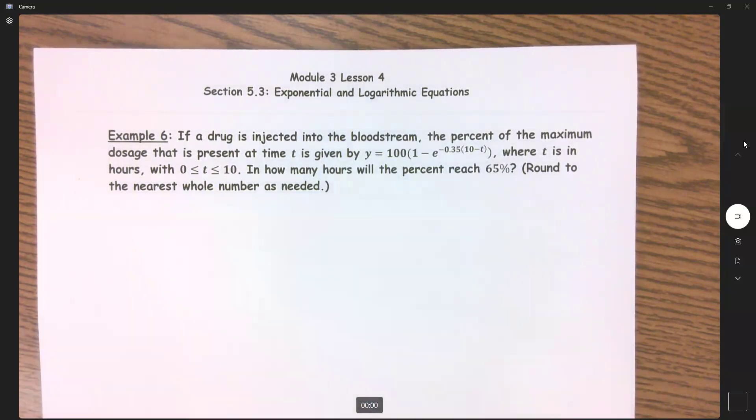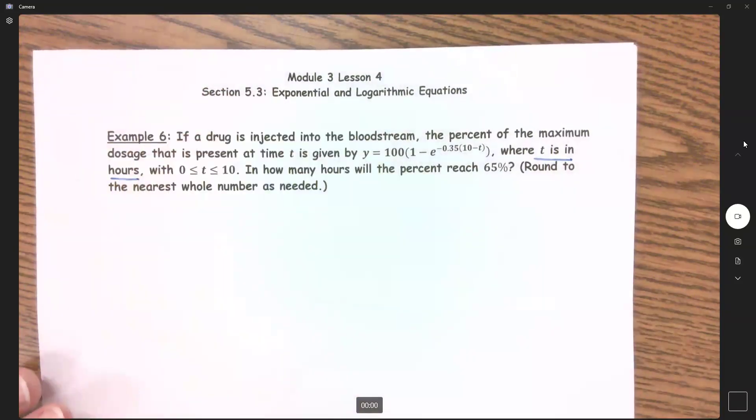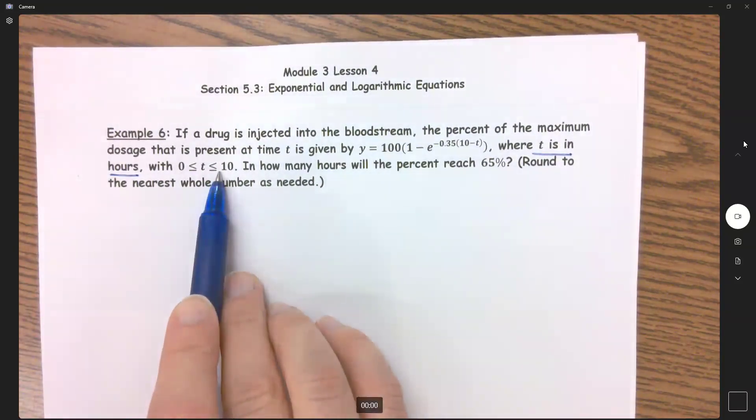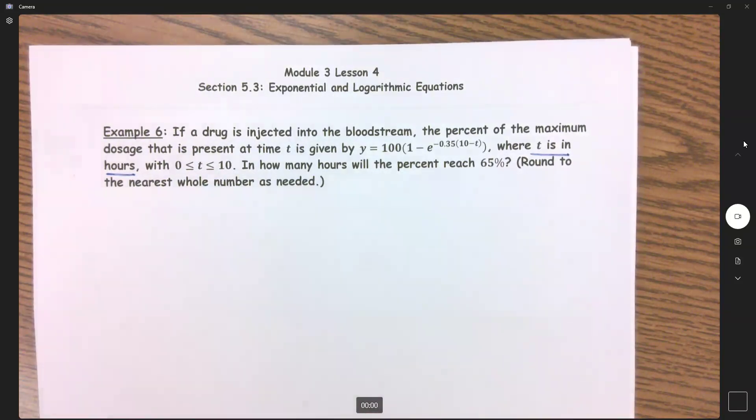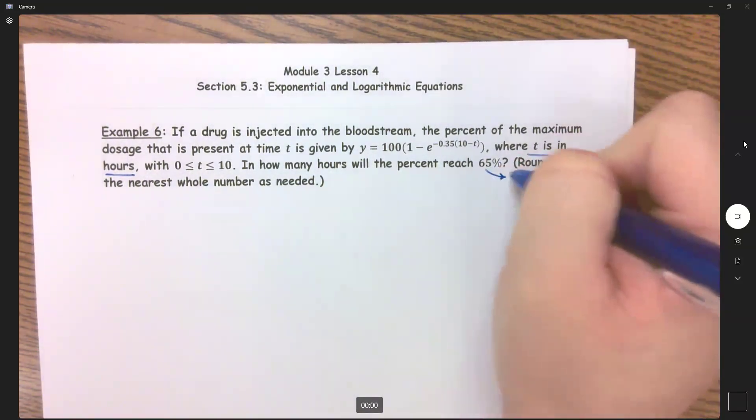If a drug is injected into the bloodstream, the percent of maximum dosage that is present at time t is given by y equals 100(1 - e^(-0.35(10-t))), where time is in hours and we are between zero and 10 hours. How many hours will the percent reach 65%? We're going to round to the nearest whole number as needed.